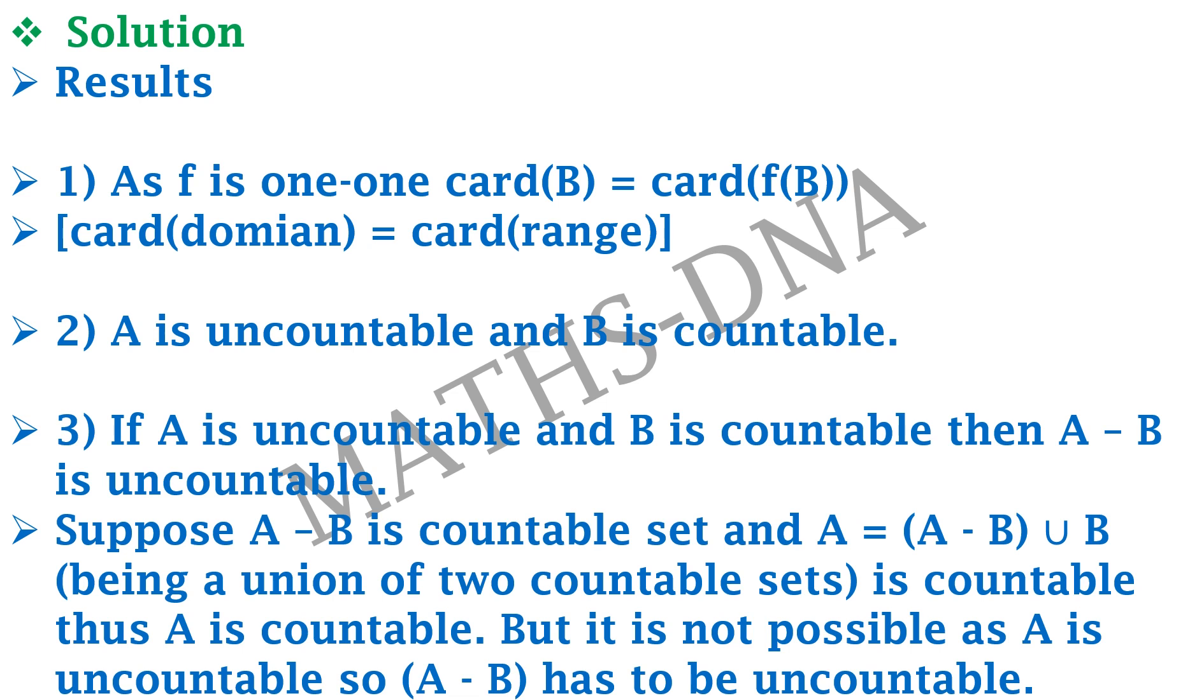Then we know that A equals (A minus B) union B, and B is countable, and if we are assuming that A minus B is countable, then the union of two countable sets is again countable, which gives us that A should be countable. But that is not possible as the given set A is uncountable, so A minus B has to be uncountable.